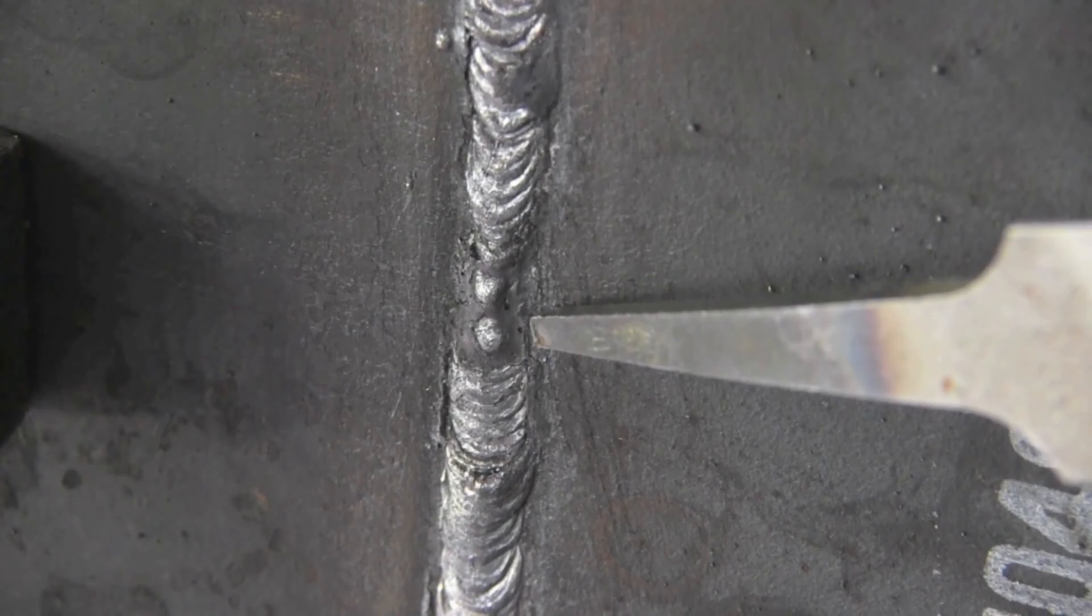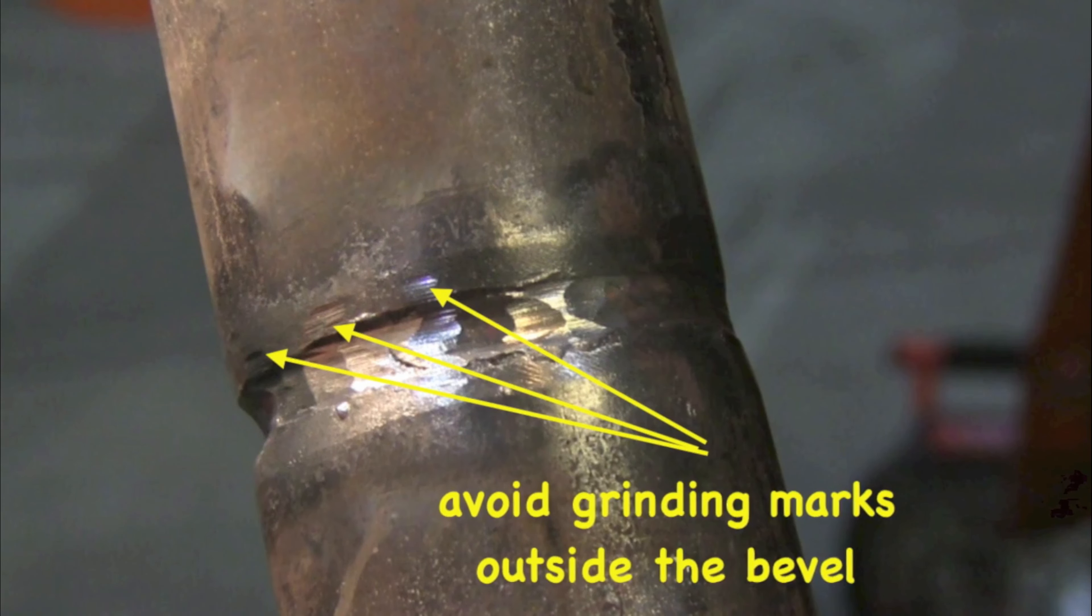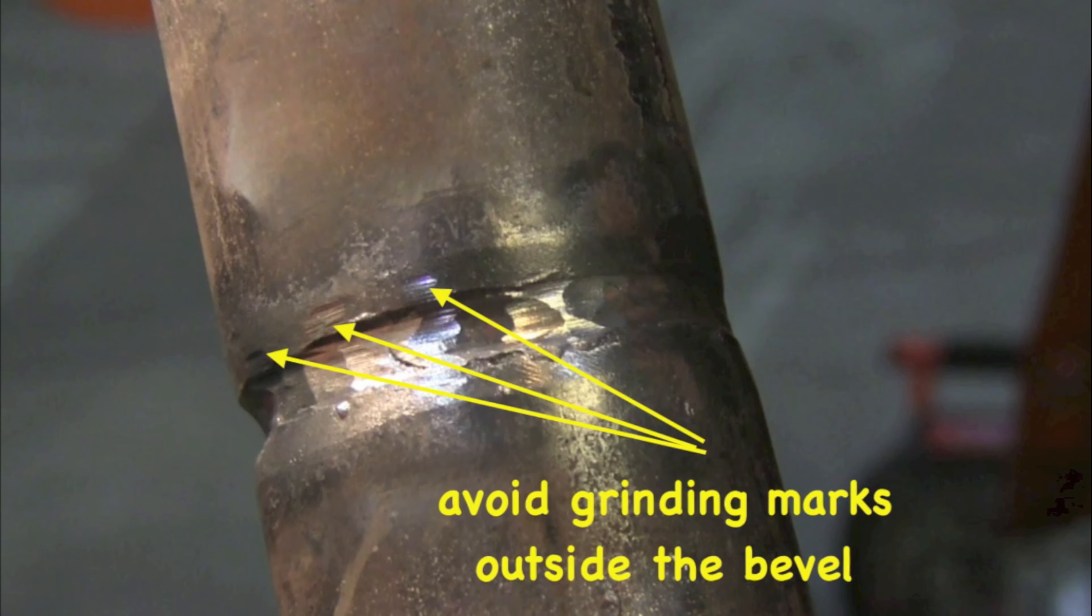It's much easier to fix a keyhole that's a little too large like this than it is to just keep fighting the keyhole sometimes. That's been my experience. Sometimes a grinder is allowed. Sometimes it's not. Sometimes they just give you a half round file and that's it.